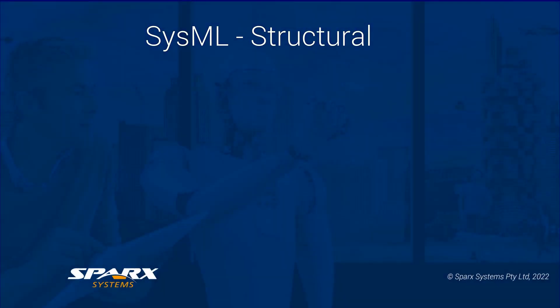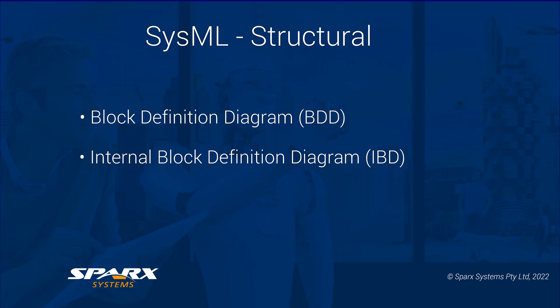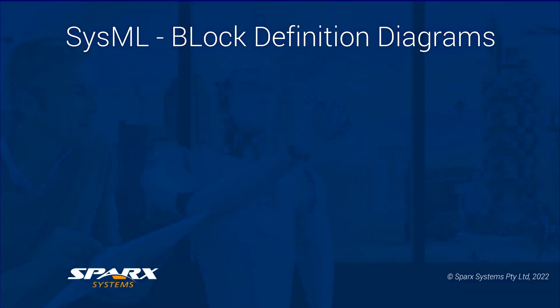With the structural side of SysML, this includes the block definition, the internal block definition, and the constraint block diagrams. A block defines a collection of features used to describe a system, subsystem, component, or other engineering objects that are related to the scope of what is being designed. This includes blocks and part properties.